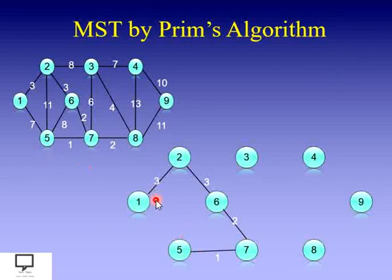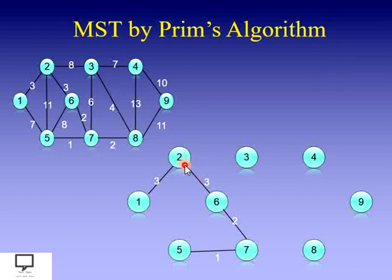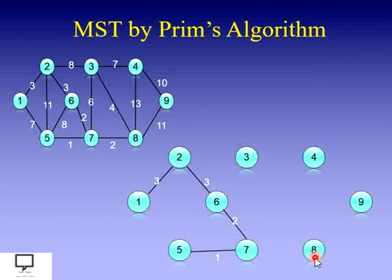Now with vertices 1, 2, 6, 7, and 5 included, we find the adjacent edges with minimum weight. Edge 1–5 would not be chosen as it has a higher weight, and connecting 5 again would form a cycle, which is not allowed. Edge 2–5 has weight 11 (highest), 2–3 has weight 8. Edge 6–5 with weight 8 would form a cycle. For vertex 7: edge 7–3 has weight 6 and edge 7–8 has weight 2, so we include 7–8 as it has the minimum weight.